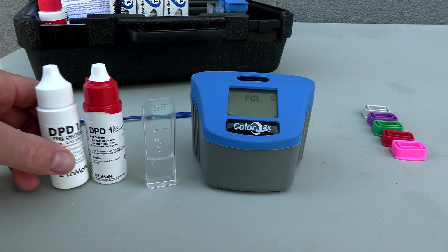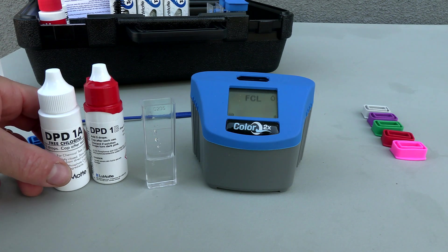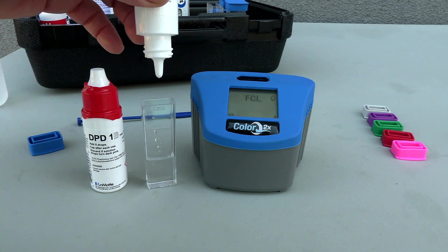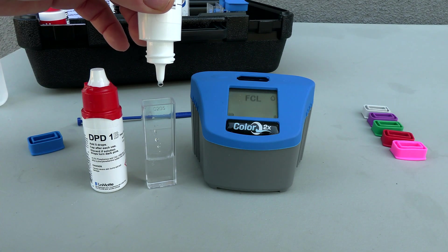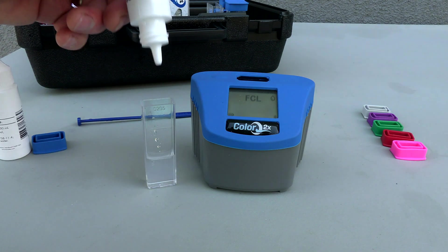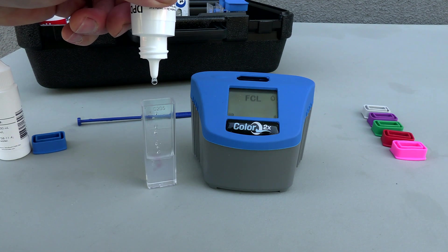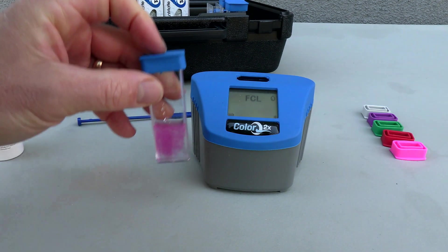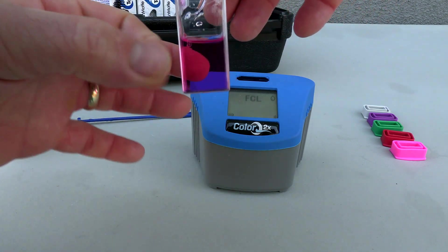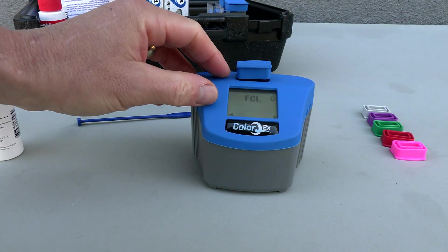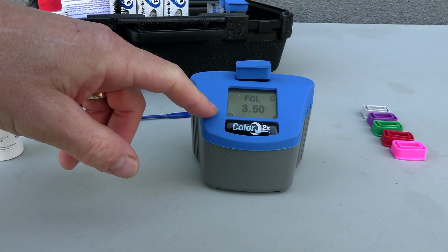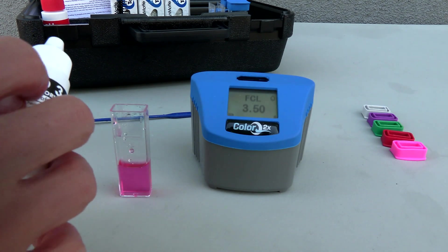Now we're going to do the free chlorine test. You're going to put five drops of the DPT1A and the DPD1B. You want to hold the reagent completely vertical, count off five drops. Go ahead and put the blue cap on and invert it. I also like tapping it to release any air in there. The free chlorine is coming in at 3.5.